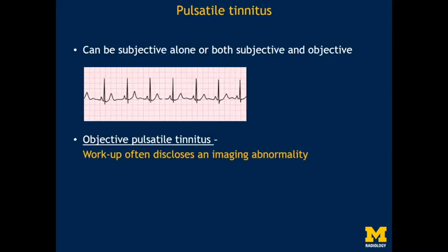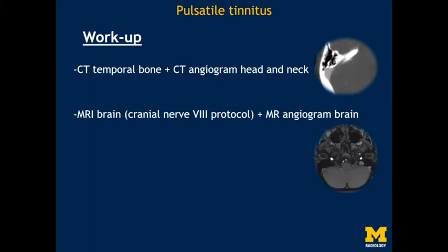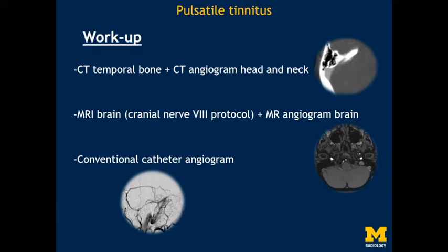Let's now focus on pulsatile tinnitus. This type of tinnitus can be either subjective or objective. In most patients who present with objective pulsatile tinnitus, the workup will often disclose an imaging abnormality. At my institution we start off with a CT of the temporal bone along with a CT angiogram of the head and neck. This enables us to pick up abnormalities of the temporal bone itself but also of the vascular system. You could start with an MRI brain with CN8 protocol and add an MR angiogram to achieve similar results, with conventional catheter angiography reserved for high clinical suspicion of entities like arteriovenous fistula.